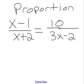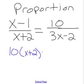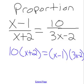Alright, so when you did this one, did you go ahead and you cross-multiply? And so 10 parenthesis x plus 2 equals x minus 1 times 3x minus 2. So you cross-multiply to start with.